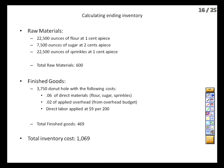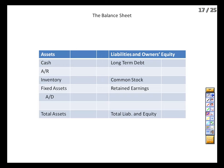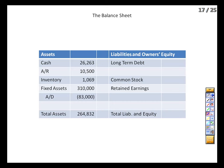Now we can do the balance sheet. Cash from the cash budget: $26,263. Accounts receivable is the uncollected 30% of March sales: $10,500. Inventory: $1,069. Fixed assets have increased from $250,000 to $310,000, and accumulated depreciation has increased by $8,000 to $83,000, giving total assets of $264,832. On the liability side, debt and stock are unchanged; retained earnings rolls forward by adding net income to the beginning balance, and we get $264,832 — it balances.